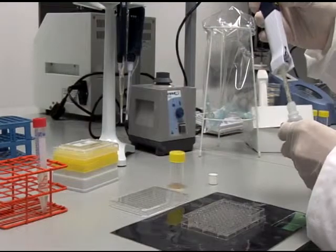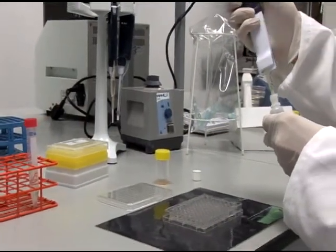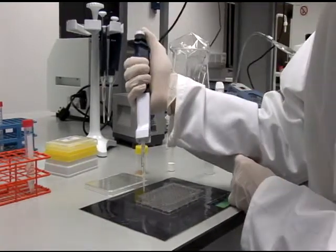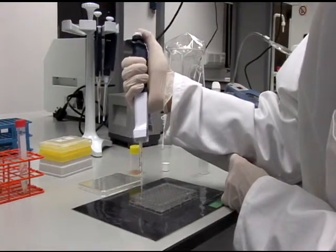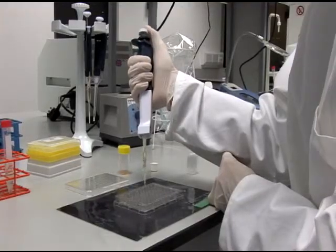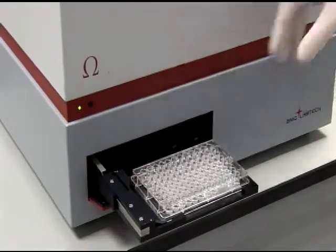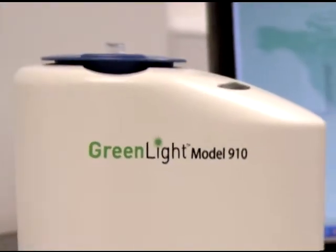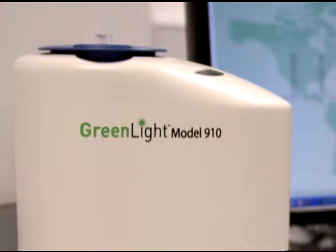The Greenlight 960 is a simple mix and measure assay. Using a 96-well plate, pipette in 100 microliters each of the sensor reagent, food homogenate, and mineral oil. Load the plate into the reader and you're done.